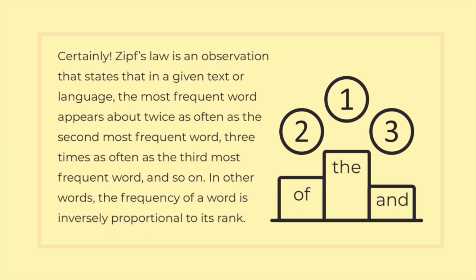Ziff's Law is an observation that states that in a given text or language, the most frequent word appears about twice as often as the second most frequent word, three times as often as the third most frequent word, and so on. In other words, the frequency of a word is inversely proportional to its rank.